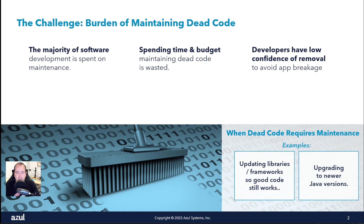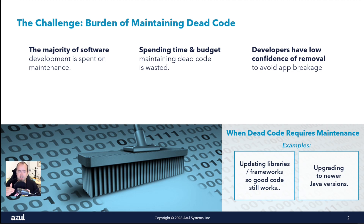The times that you do actively spend time maintaining dead code are when you have to update a major version of a library — going from one version of Spring to another, changing a major version of iText, or updating between Java 8 to 11, 11 to 17, 17 to 21. These are times where we have to get all of our unit tests to compile, all of our code to compile, and you just have to maintain a lot of code whether you really want to or not.